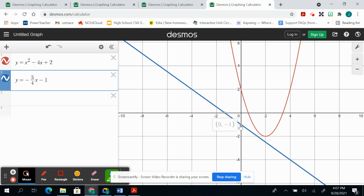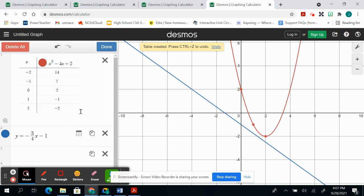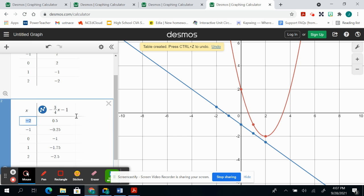And again, toggle, table, toggle, table, and then you can check points.